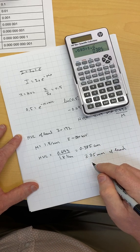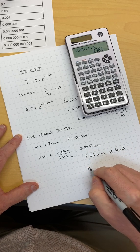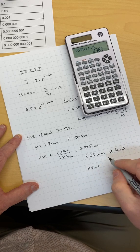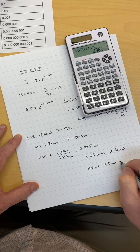If you go on the internet, you'll find out that the internet will tell you that the HVL of iridium-192 is actually 4.8 millimeters of lead.